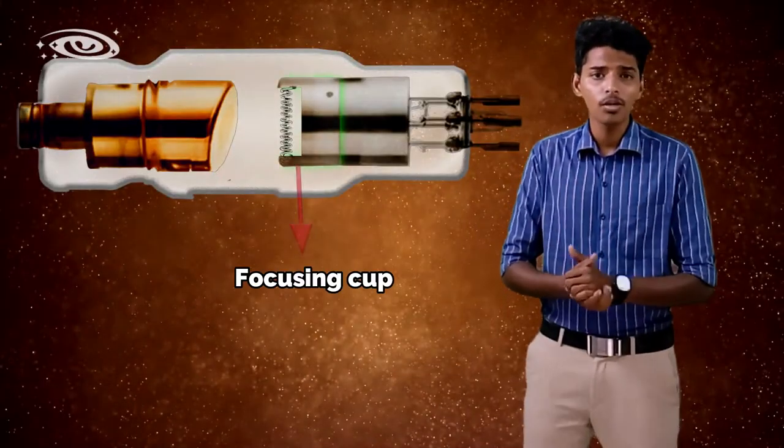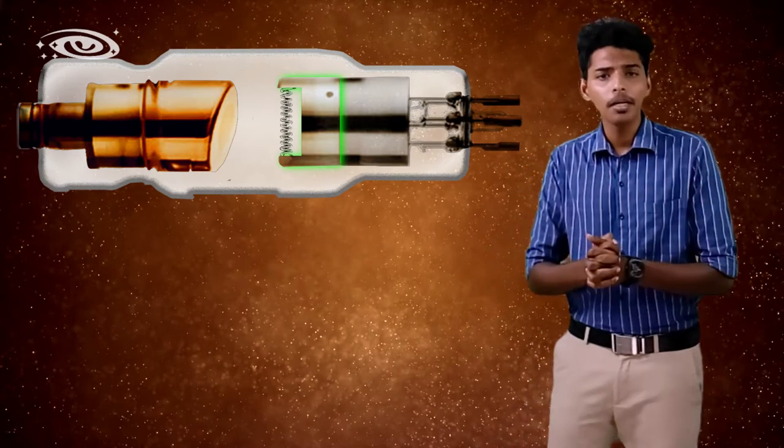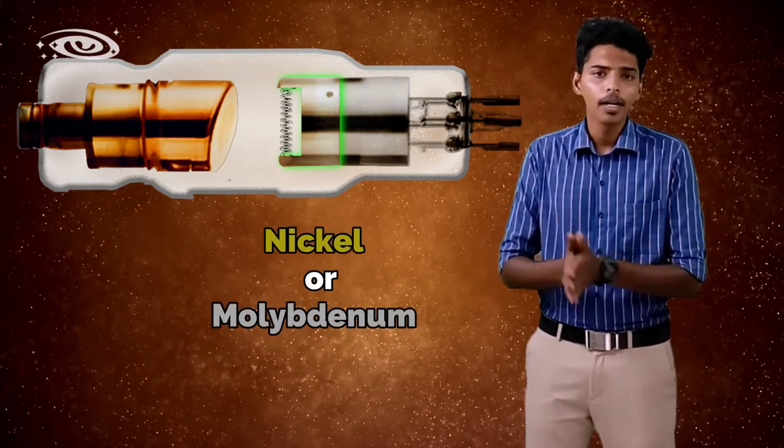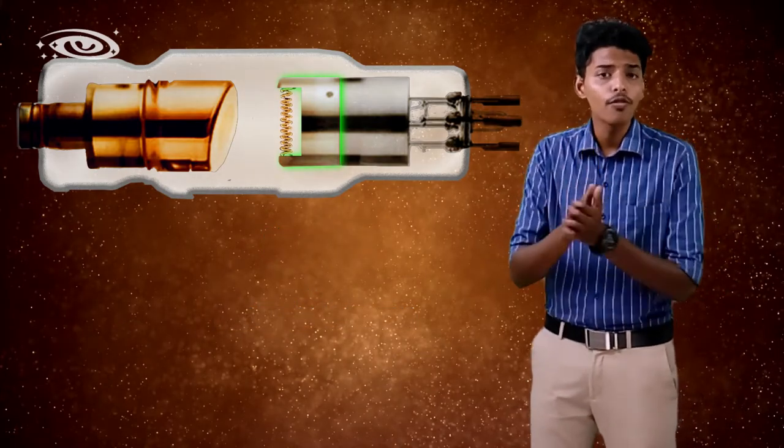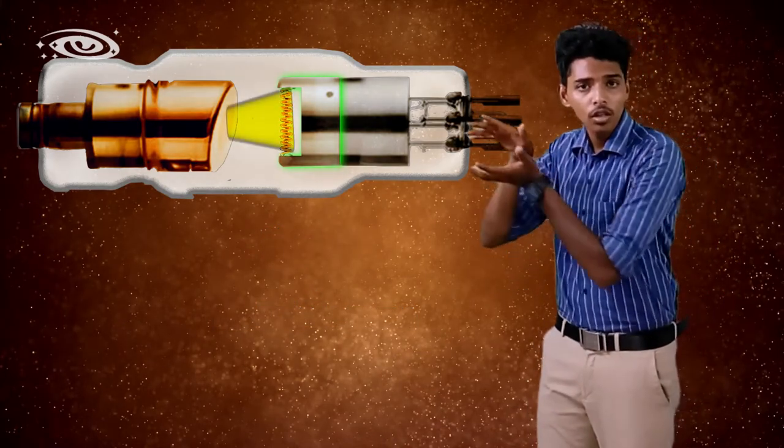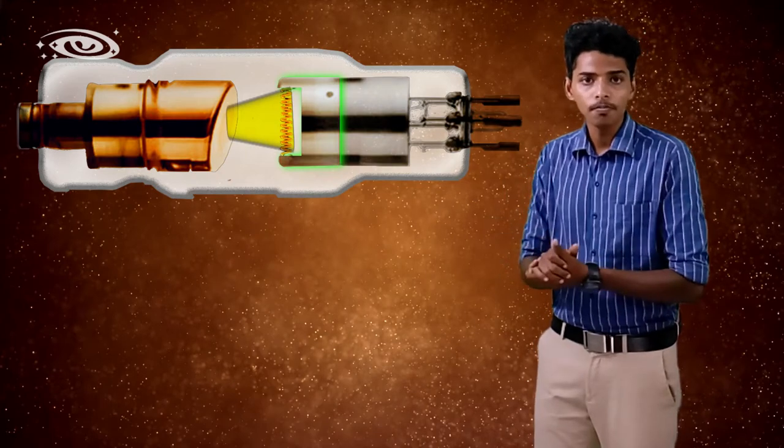Now we'll see about the focusing cup. This focusing cup is made up of nickel or molybdenum. The reason for using the focusing cup is to focus the filament electrons to the focal spot of the anode.